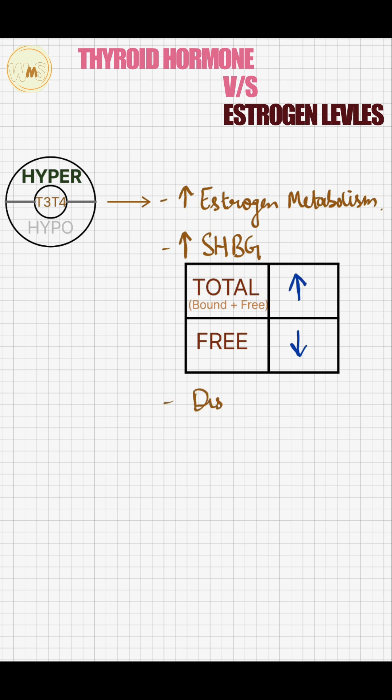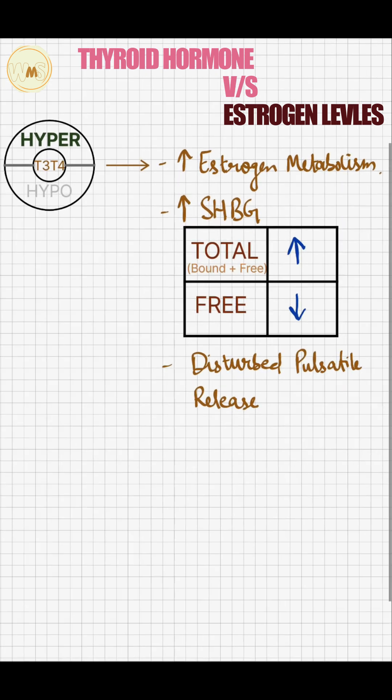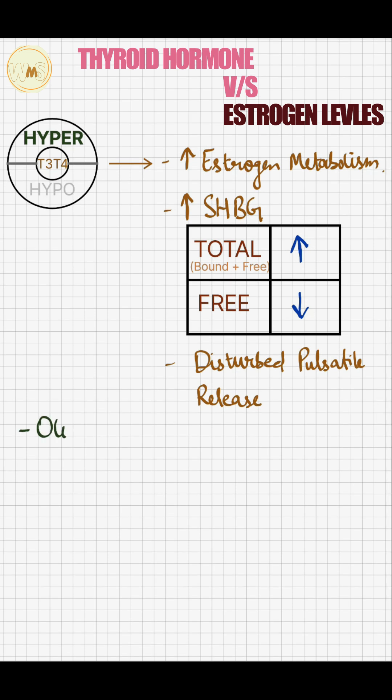In hyperthyroidism, there is disturbed pulsatile release of GnRH and LH which causes irregular cycles, resulting in oligomenorrhea and amenorrhea because of decreased estrogen levels and disturbed tertiary axis.